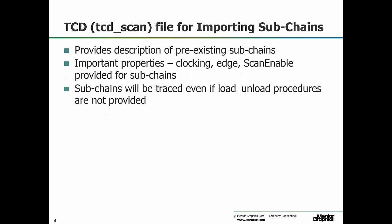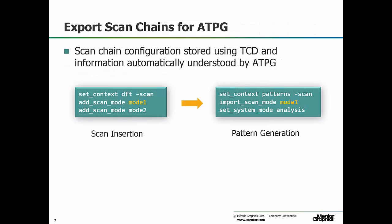The TCD scan files are used for providing a description of pre-existing subchains. This file contains properties that describe clocking, the edge of the clock, and scan enable with its polarity. The subchains can be traced even if load/unload procedures are not provided. After scan insertion is performed, TessnScan exports the scan chains via the TCD file, which are automatically understood by test compression during ATPG.